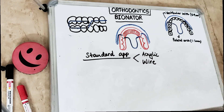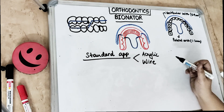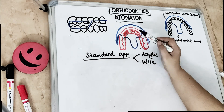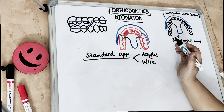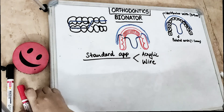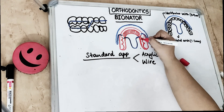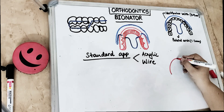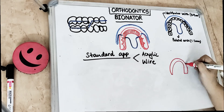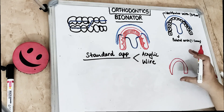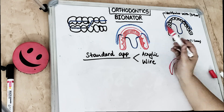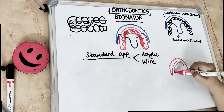The standard (neutral) Bionator has two components: the acrylic component and the wire component. The lower acrylic component is a horseshoe-shaped lingual plate extending from the distal of the last erupted molar on one side to the distal of the last erupted molar on the other side, covering the lingual surfaces. In the upper arch, the lingual extension covers only the molars and premolars, while in the lower arch the entire segment is covered up to the last erupted molar.